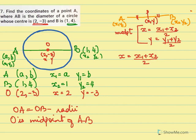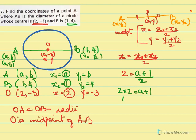We have x = (x1 + x2)/2. Our x is 2, x1 is a, and x2 is 1. So 2 = (a + 1)/2. Multiplying both sides by 2: 4 = a + 1. Therefore, a = 3.